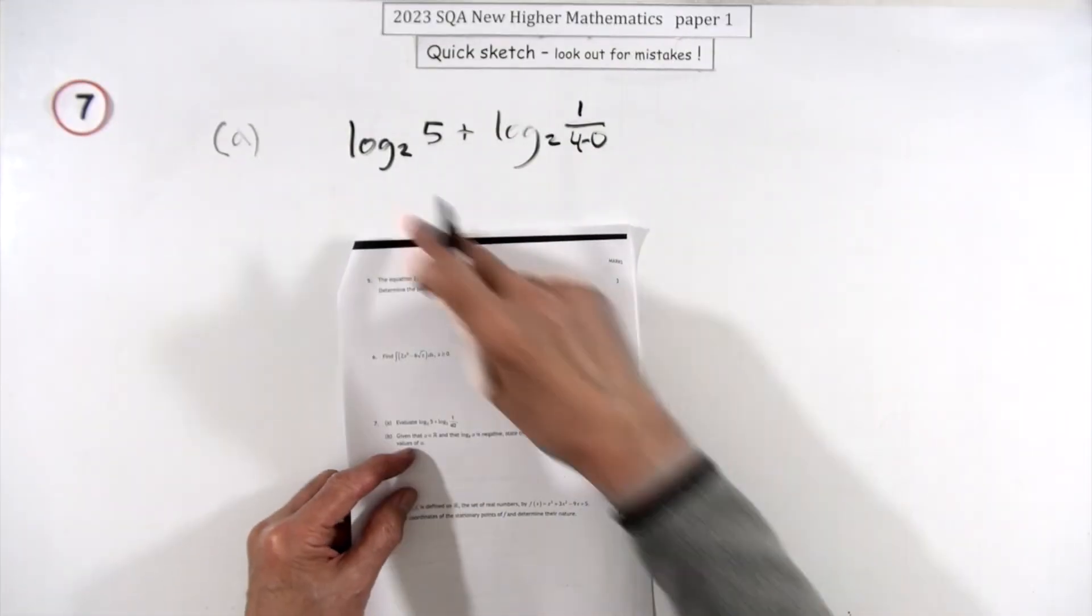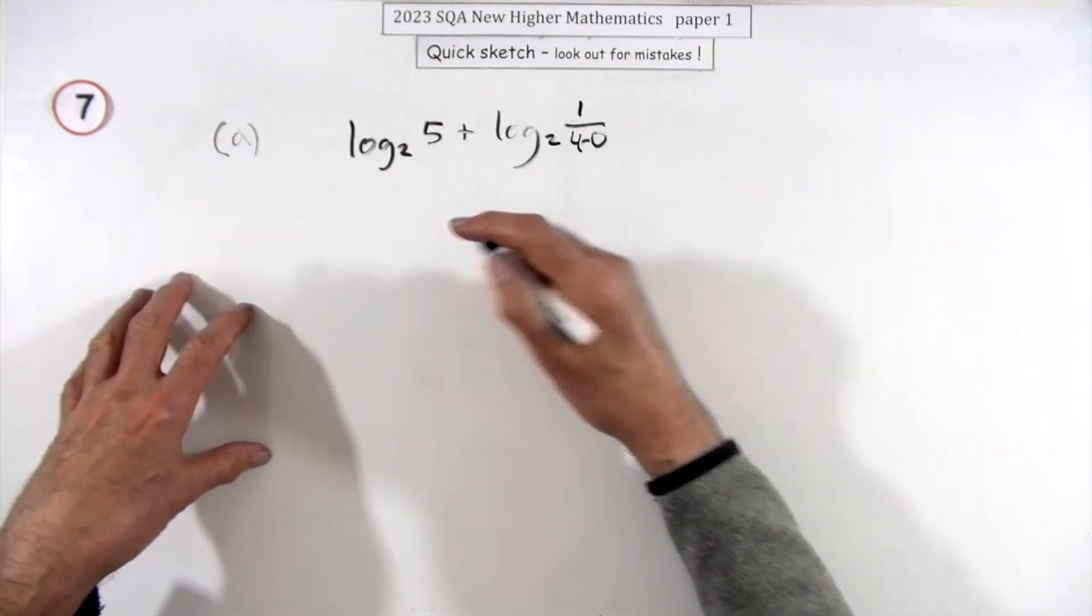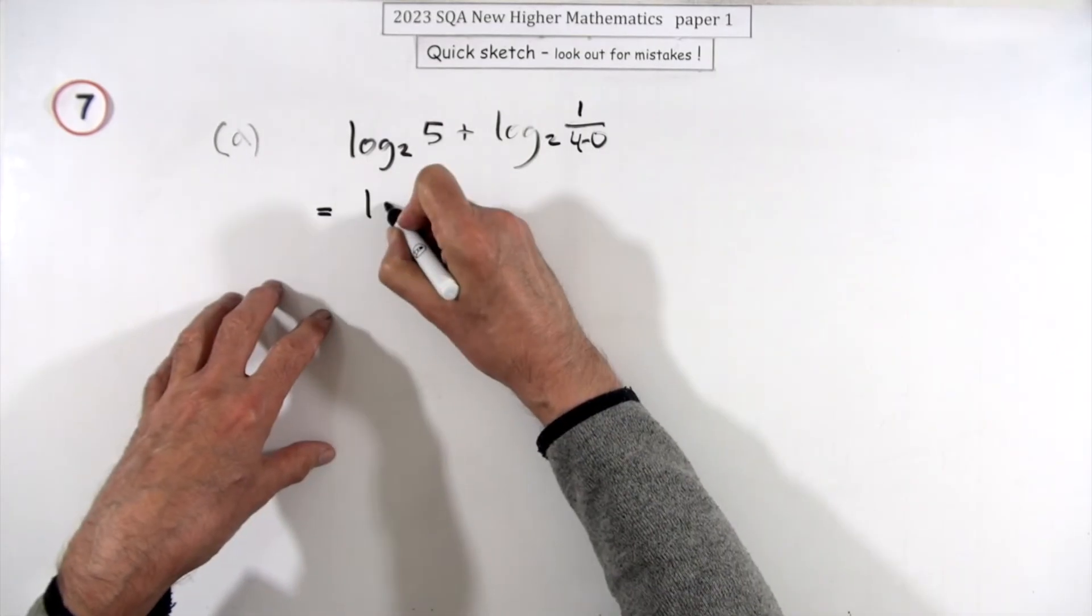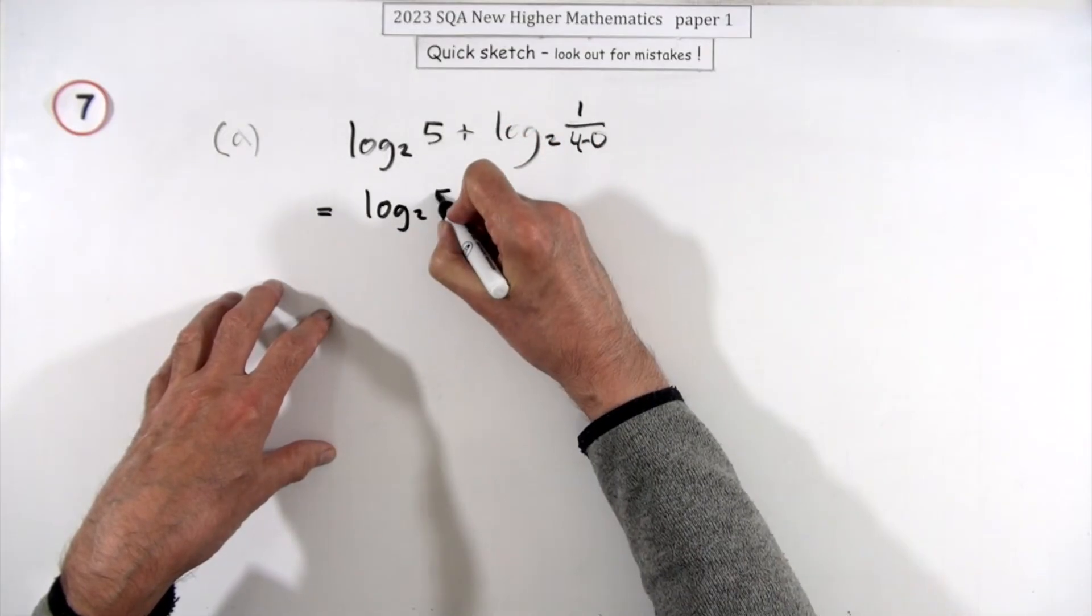Number seven for three marks, evaluate this expression here involving logs. You just did that earlier on, so you're just going to use your laws of logs. This time when you're adding them it'll be the product, so it'll be the logarithm of five times one over forty.